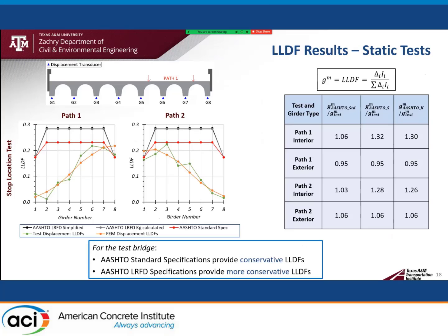The live load distribution factors for each girder were calculated using the corresponding deflection and cracked moment of inertia. In these plots, the live load distribution factors along paths 1 and 2 for the stop location tests are presented for all girders. The test live load distribution factors are shown in green while the FEM live load distribution factors are shown in orange. Red denotes the AASHTO standard live load distribution factors, and gray and black denote the AASHTO LRFD live load distribution factors. Both specifications generally provide conservative live load distribution factors, with the AASHTO LRFD specifications being more conservative.